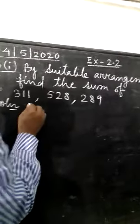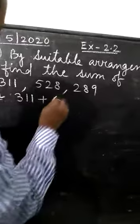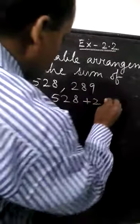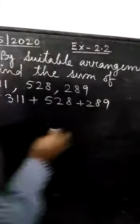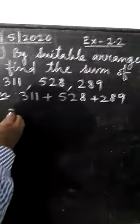Let us first remove the comma. 3, 1, 1 plus 5, 2, 8 plus 2, 8, 9. Now, let us arrange them in suitable way so that the sums become easy.